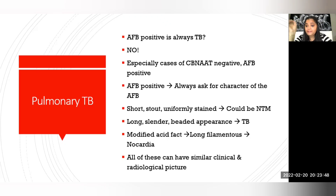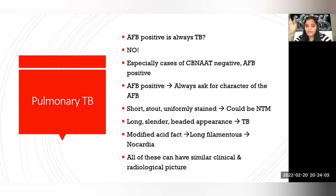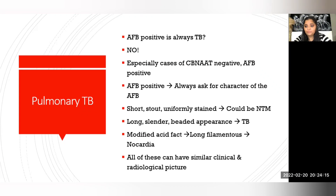Whenever you are looking at an AFB-positive result, always ask for the character of the AFB — whether they are short, stout, and uniform, or whether they are long, slender with a beaded appearance. Short, stout, and uniform could be NTM, whereas the other morphology could be TB. This is very important because the treatment of NTM is different and more prolonged than TB treatment, and NTM is most often misidentified and mistreated.